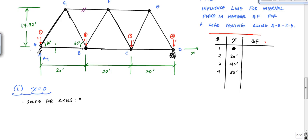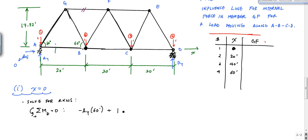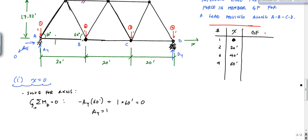When the unit load is at point A, I solve for reactions globally by taking the sum of moments about point D equal to zero. I have Ay pointing upward, Ax (which will always be zero), and Dy. The equation gives me: minus Ay times 60 feet plus one times 60 feet equals zero, so Ay equals one.